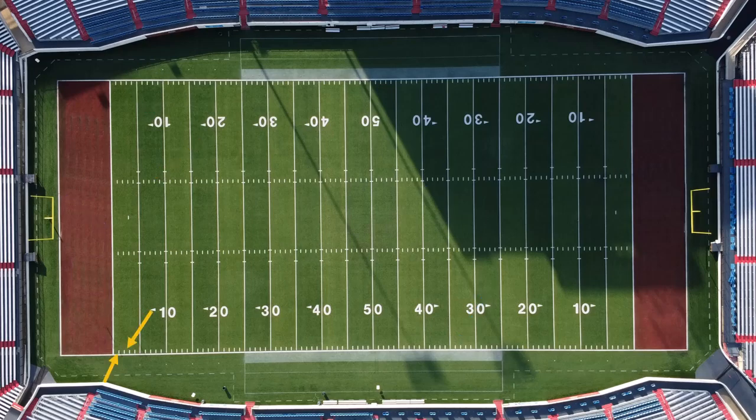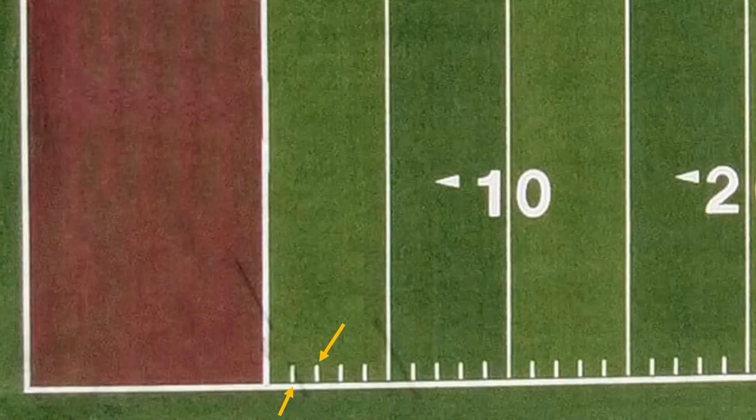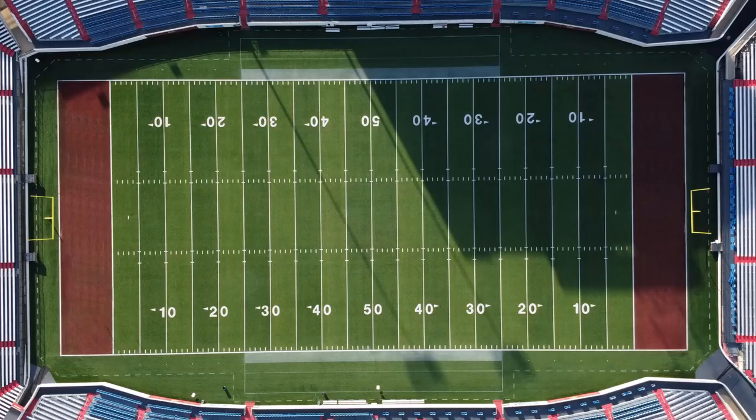What are all these lines? See these little ones? That's hard to see — hold on. These ones. These are called yard lines. Each one is a yard apart. There's 100 of them. I counted.